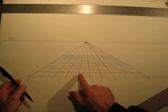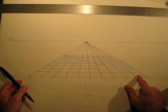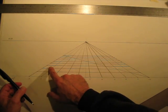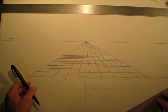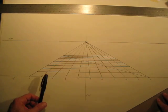Okay, we have 1, 2, 3, 4, 5, 6, 7, 8, 9, 10 squares across, and 1, 2, 3, 4, 5, 6, 7, 8, 9, 10 squares back. So there's the base for our floor grid.